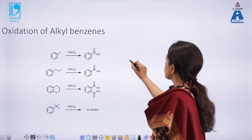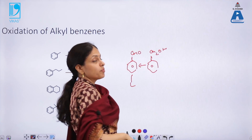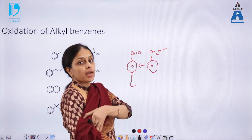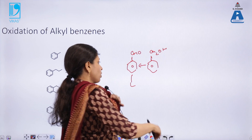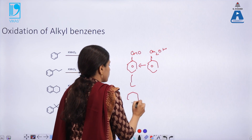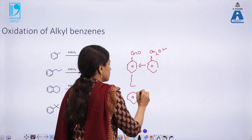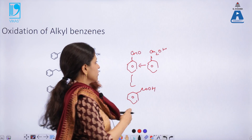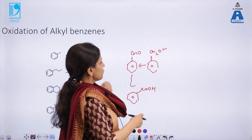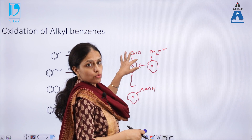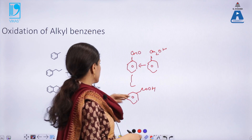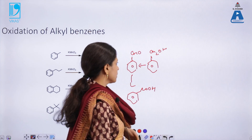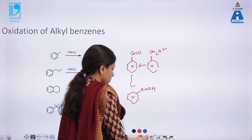Not only alkyl chains, but under KMnO4, benzyl alcohol or benzaldehyde can also be oxidized to the corresponding benzoic acid. If you have two oxidizable groups present ortho to each other, you will get ortho-phthalic acid, with other isomers also being possible.